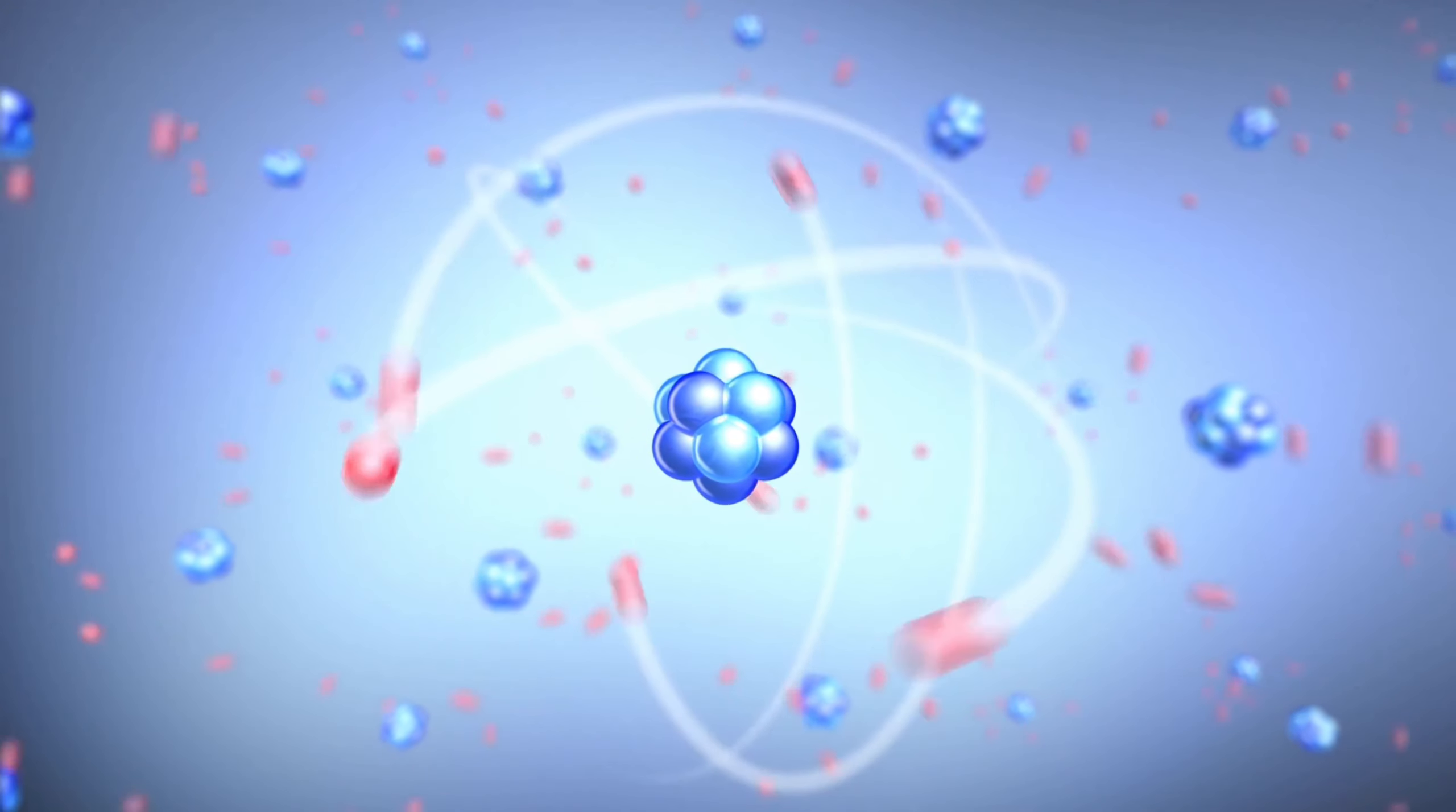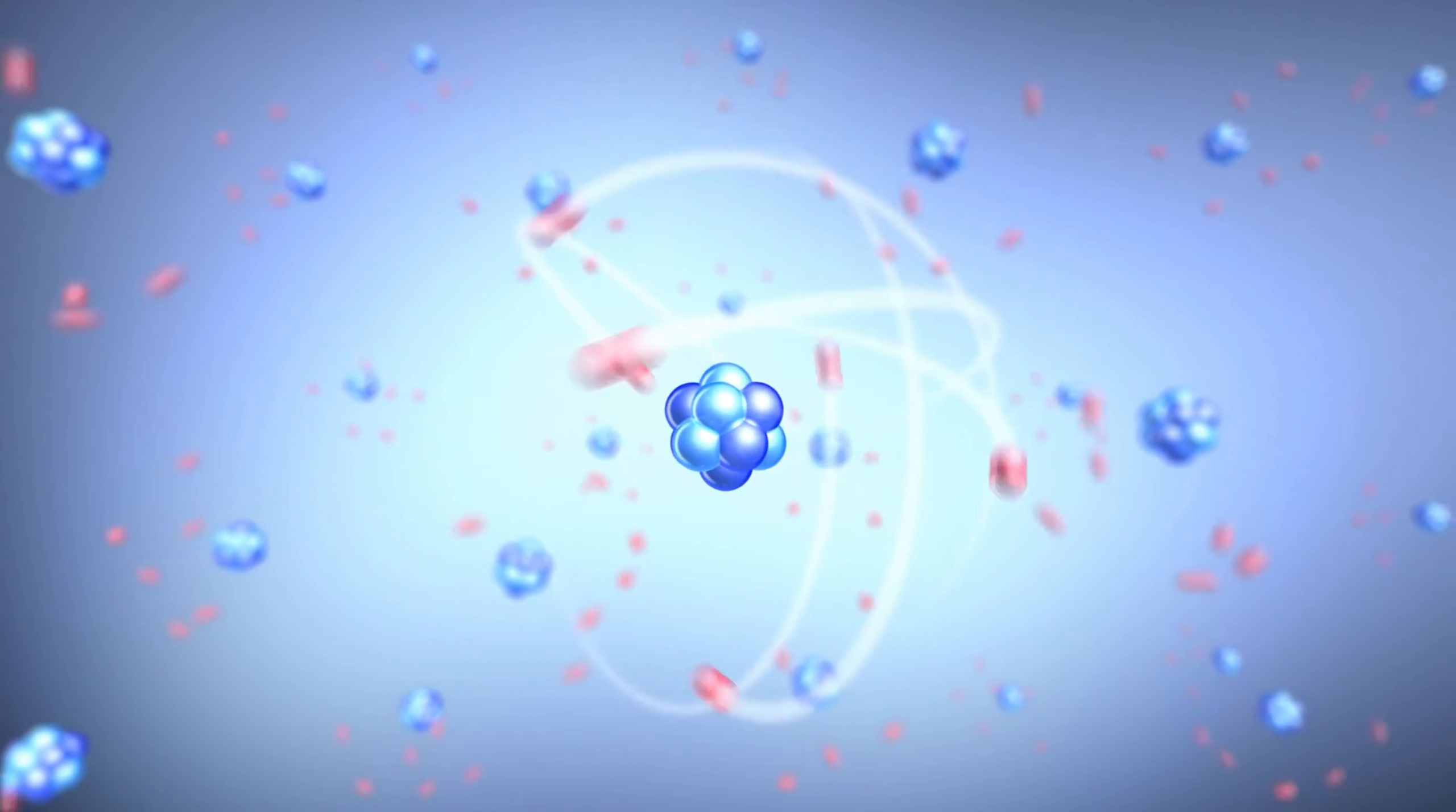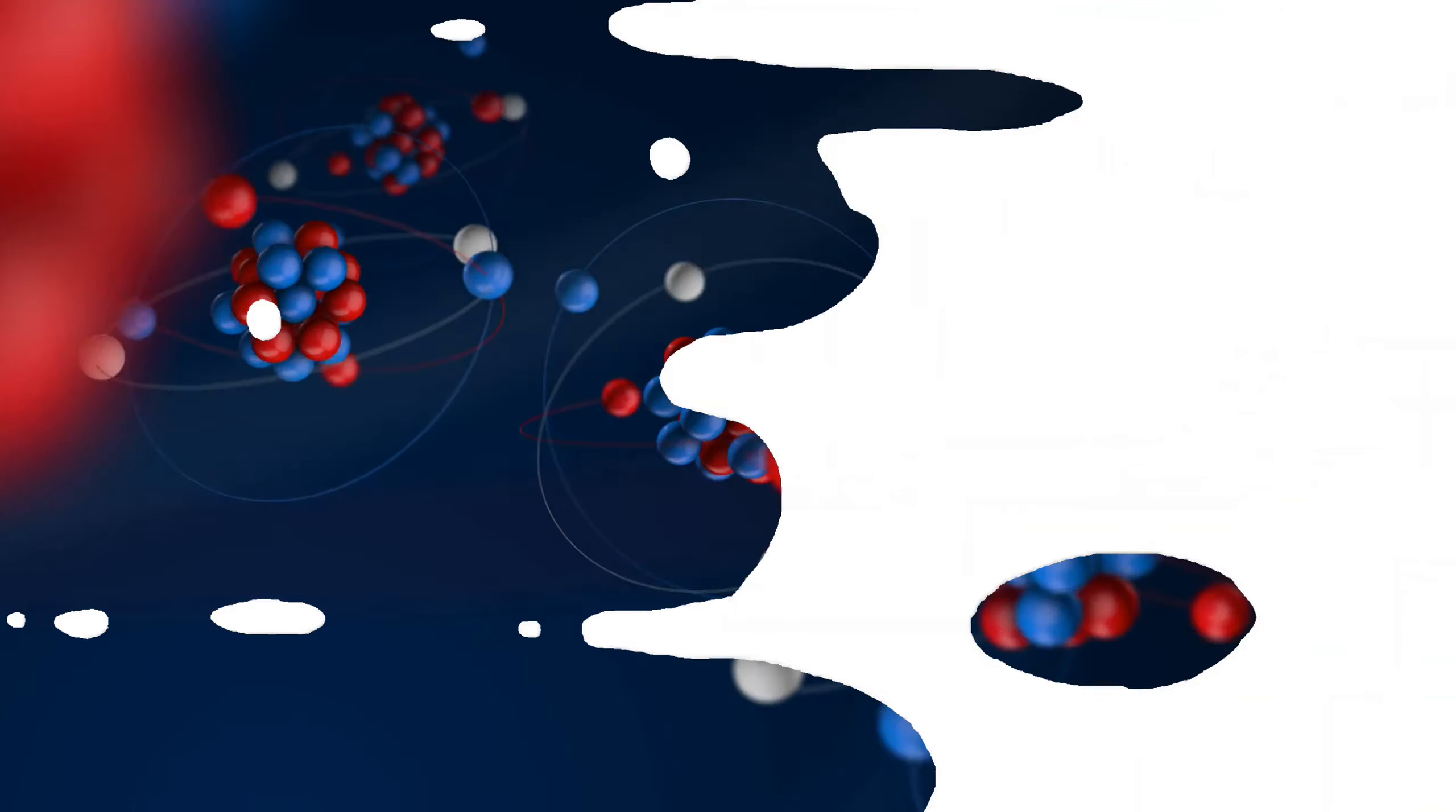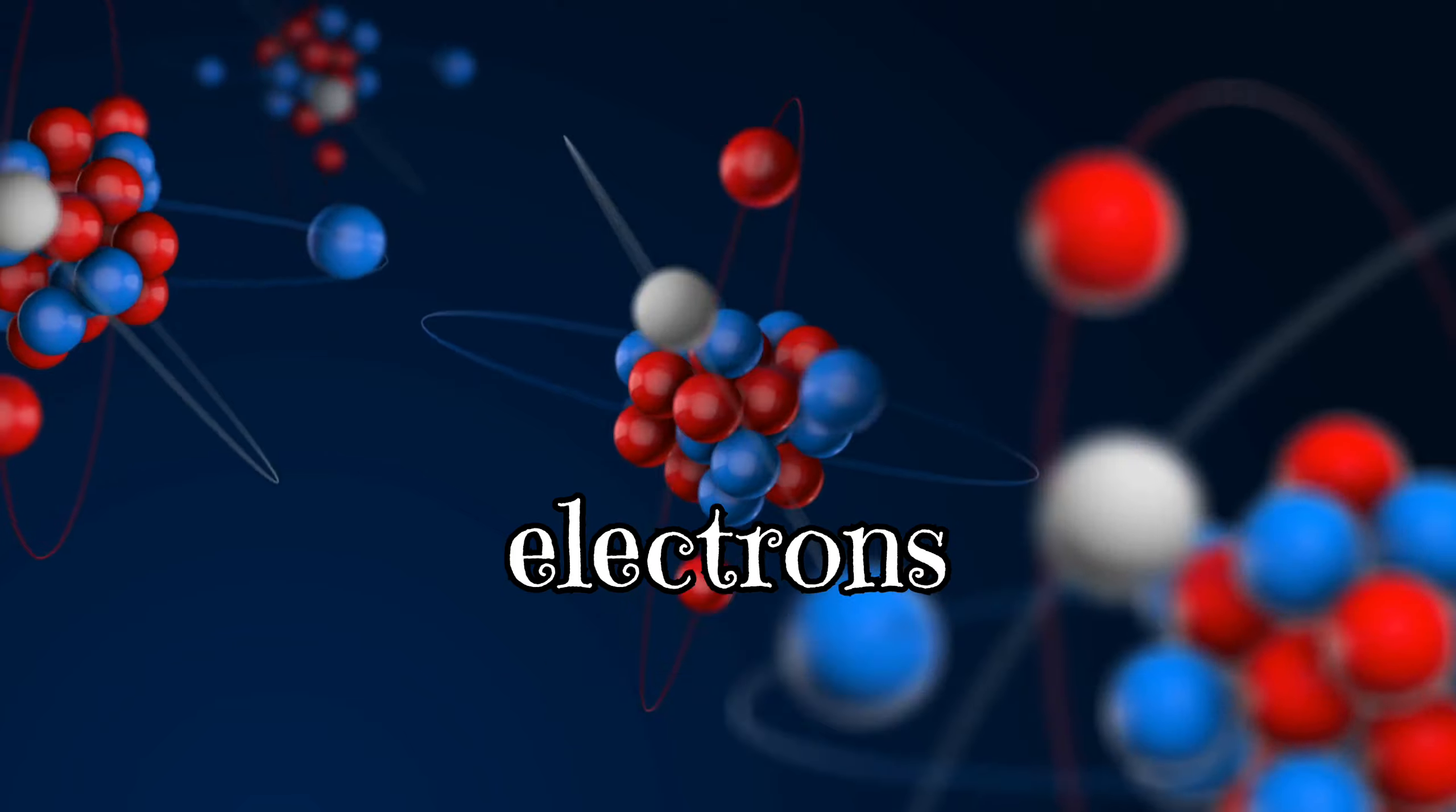Static electricity is a form of electricity that results from an imbalance between positive and negative charges within a material. This imbalance occurs when electrons, the negatively charged particles in an atom, move from one material to another.